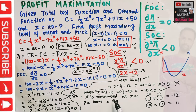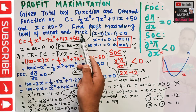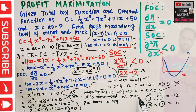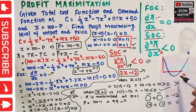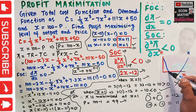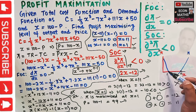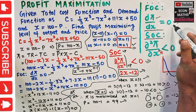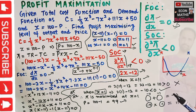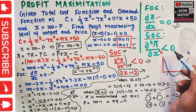Since the second derivative is negative at X = 1, profit is maximized when output X = 1. The corresponding profit maximizing price is found by substituting X = 1 into the inverse demand function: P = 100 - 1 = 99. Graphically, both X = 1 and X = 11 satisfy the first order condition where marginal profit equals zero.